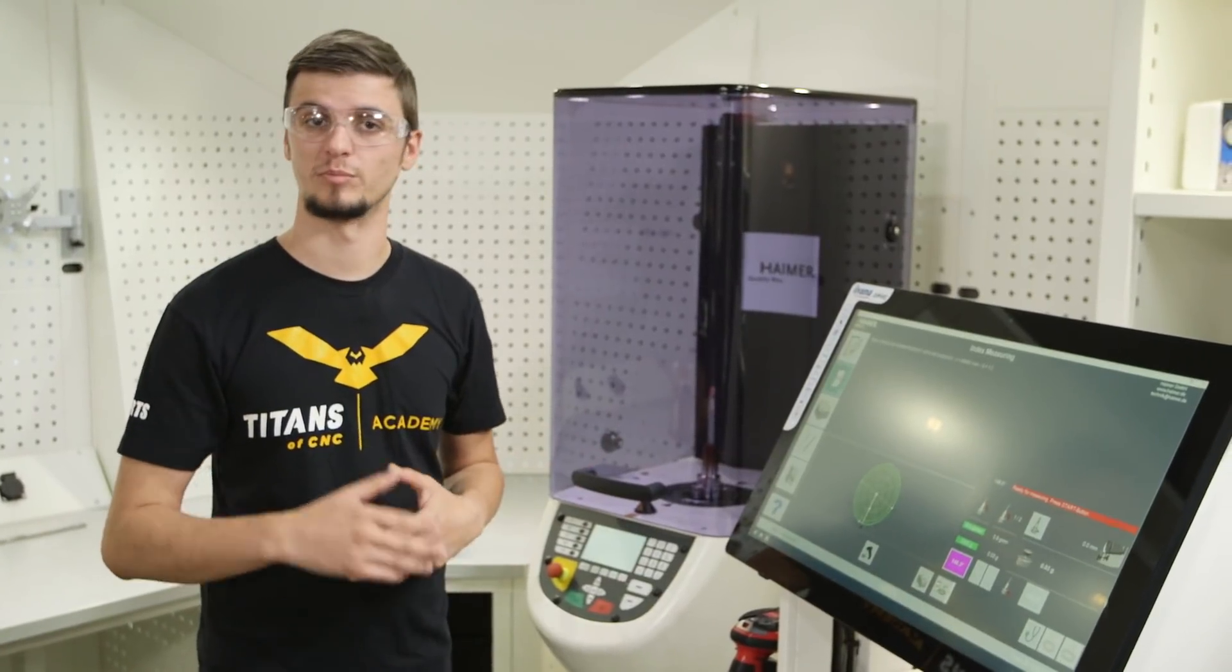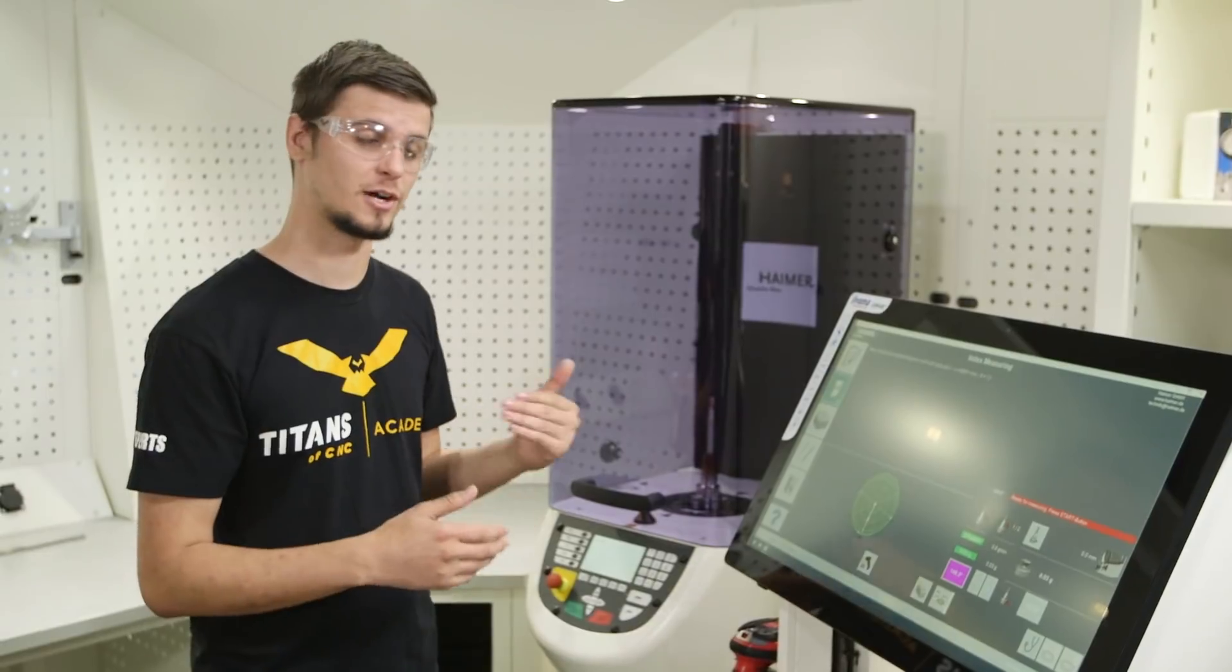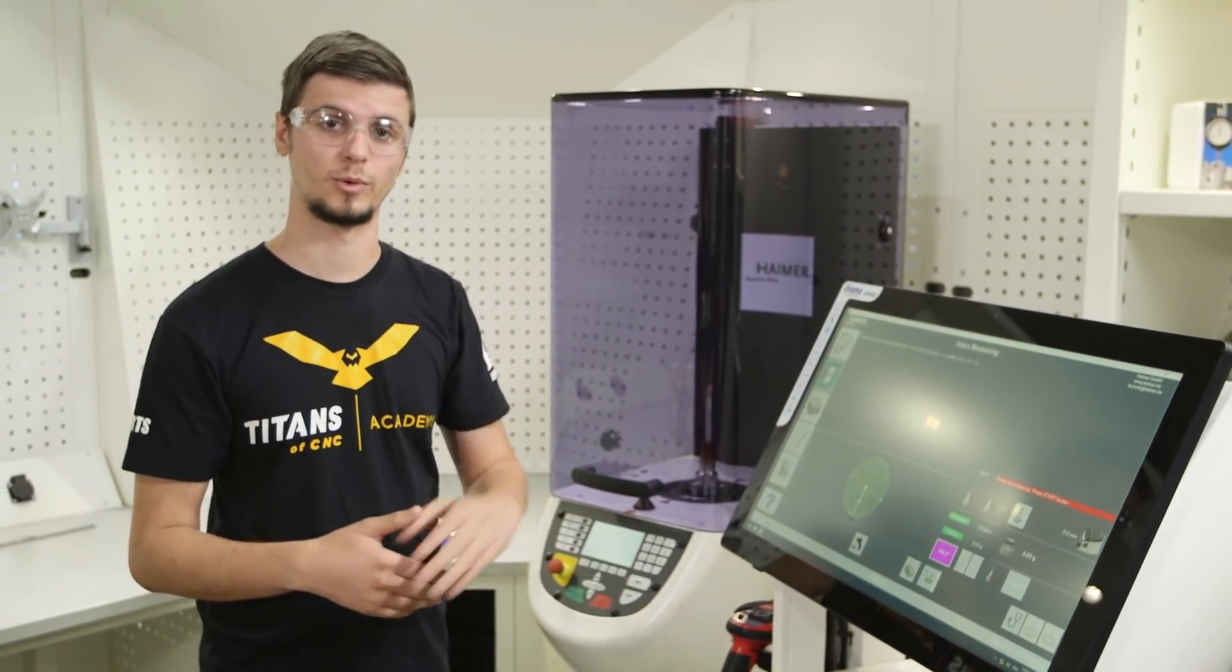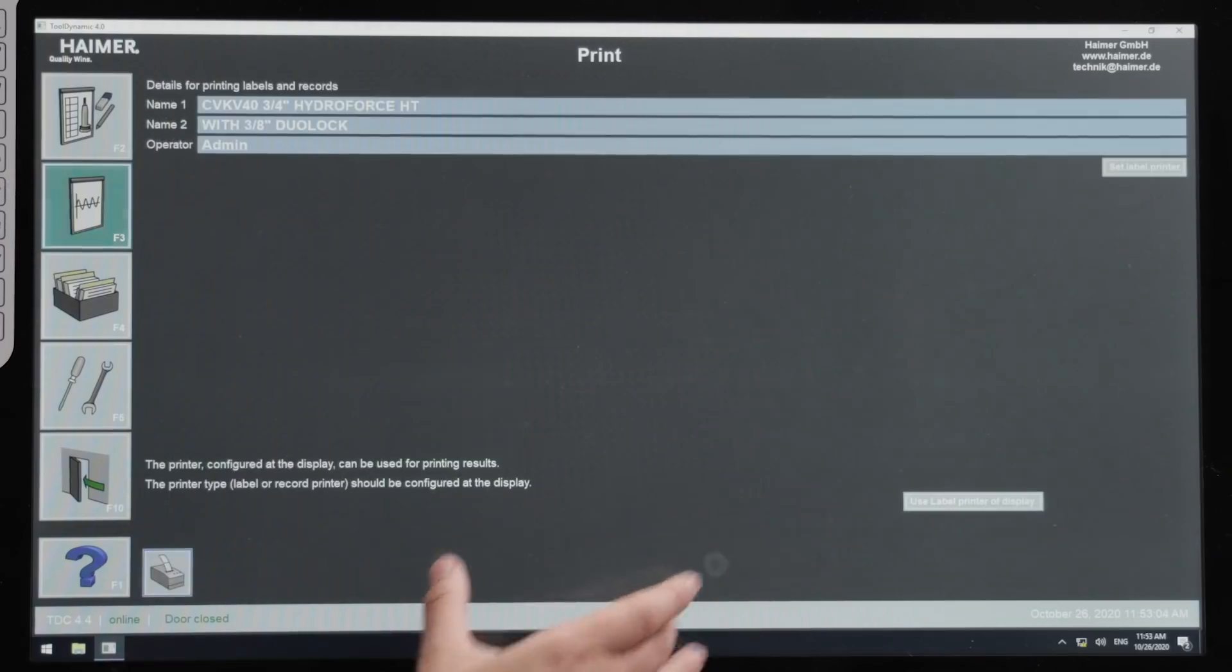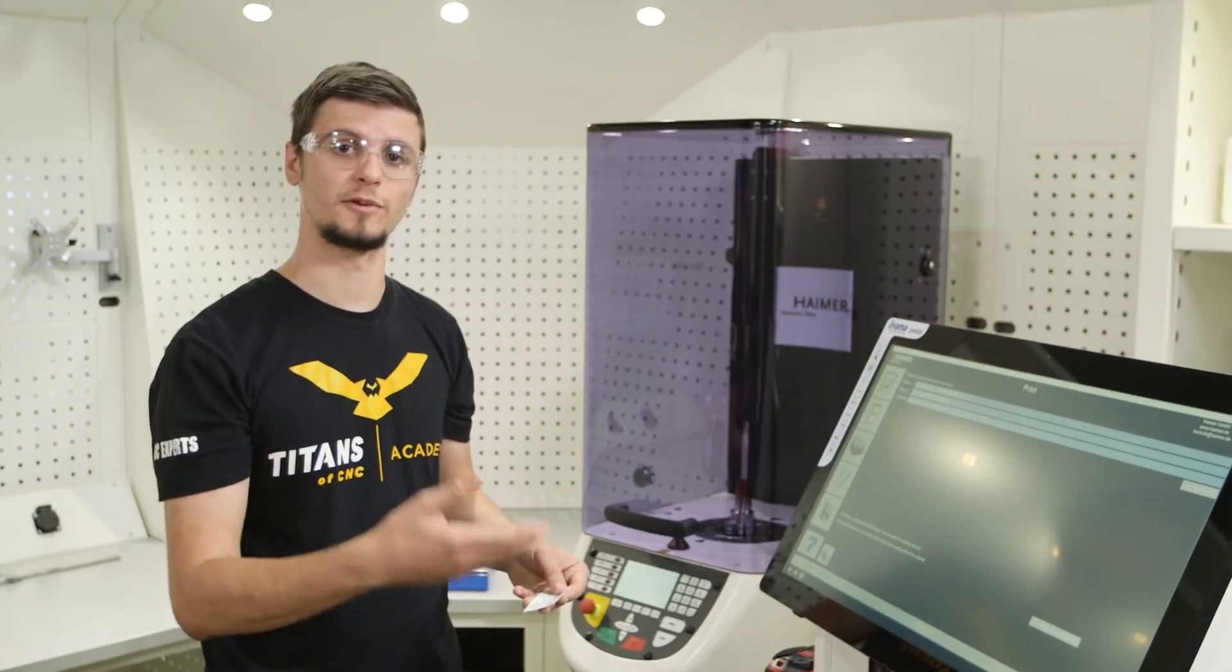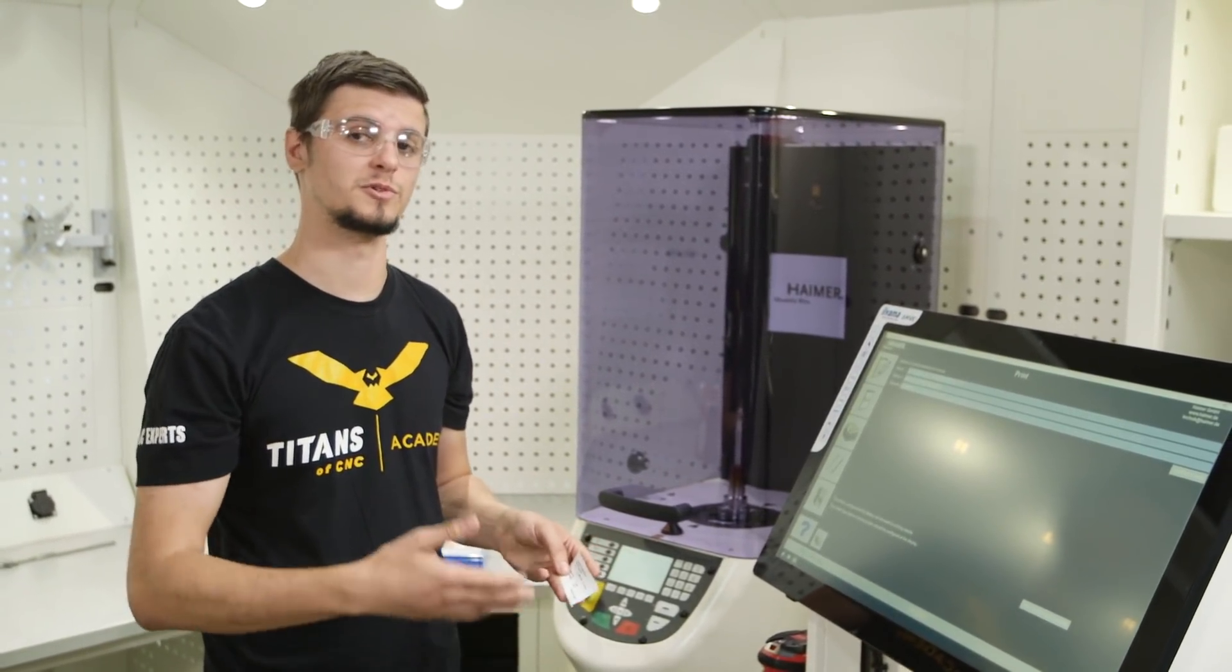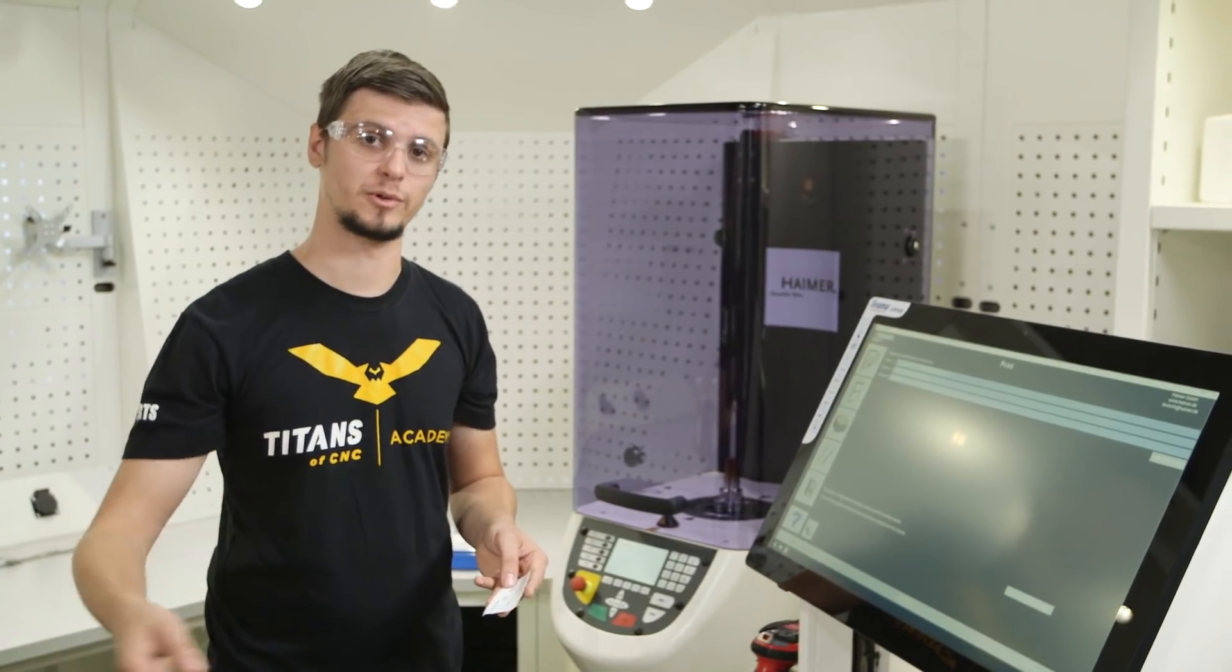Now that it's all balanced, we can print a label or a certification that that tool has gone through and been balanced to the proper requirements. It's very easy to use. We can go ahead and just click print and print out our label. Once we have the label, we can put it on our tool cart or place it with our documentation so that the setup guy knows that the tool has been properly balanced for his program.